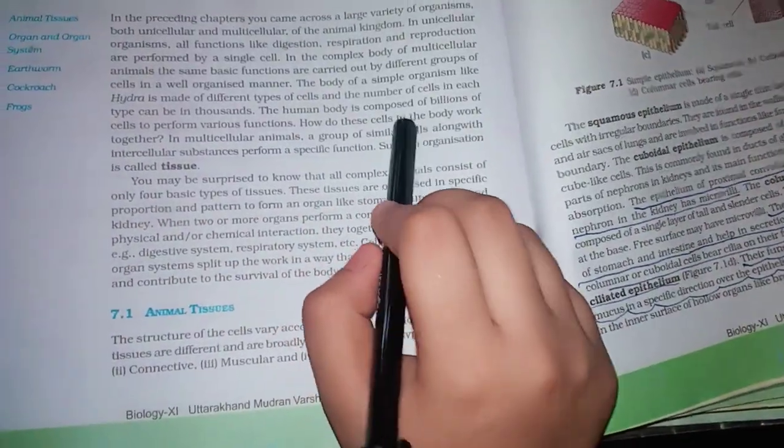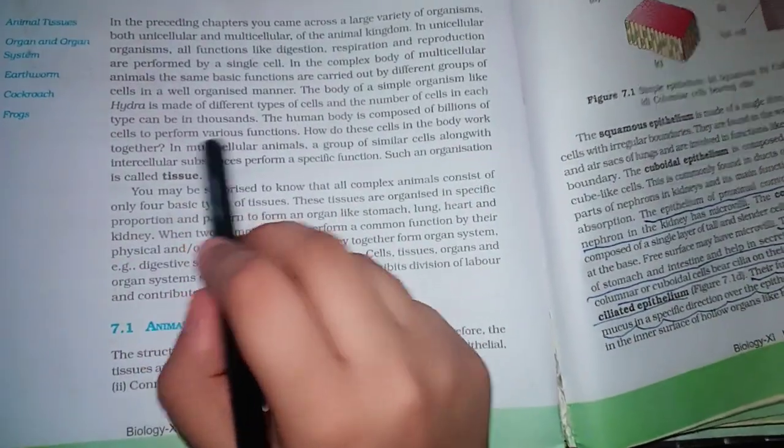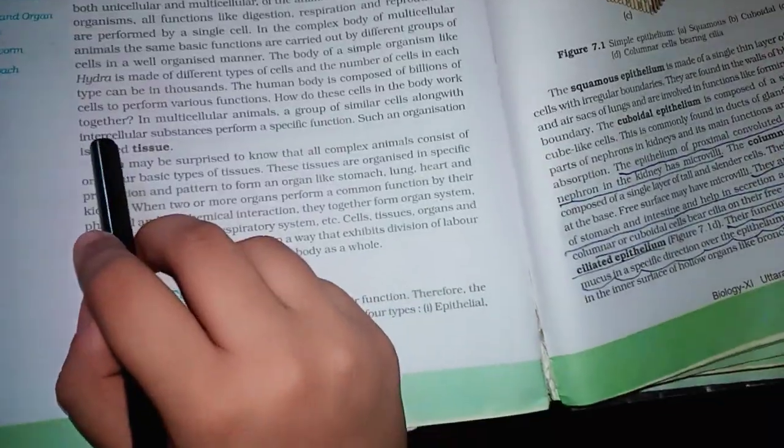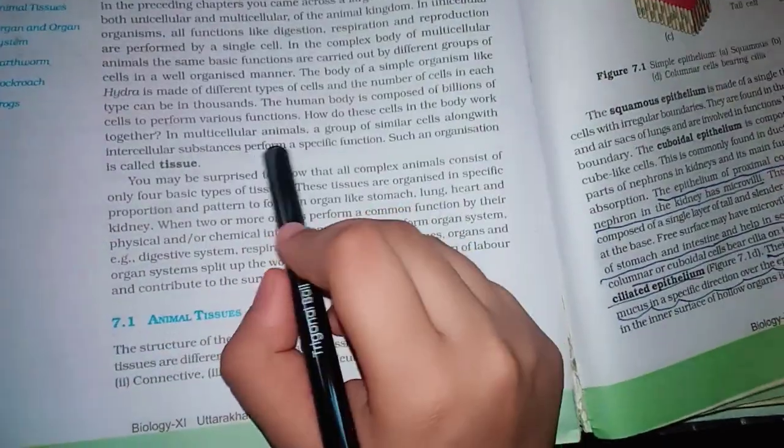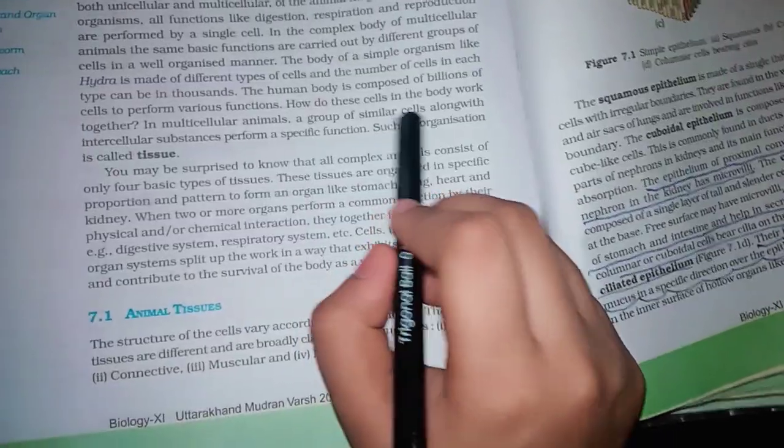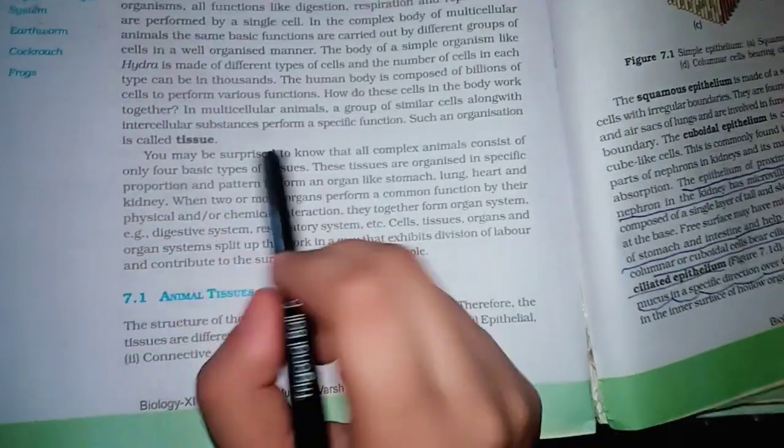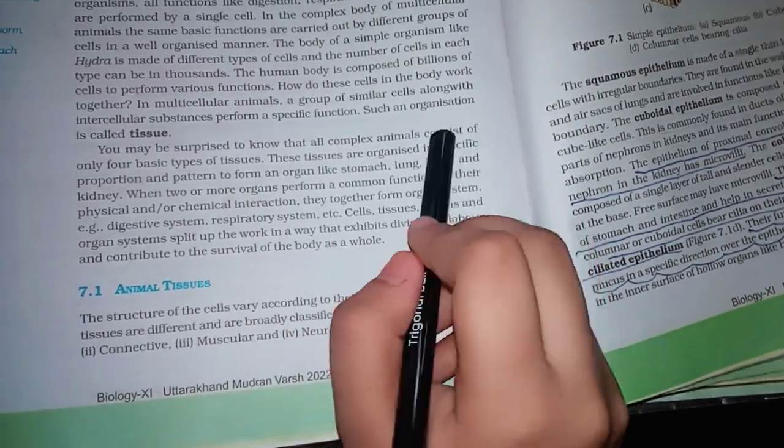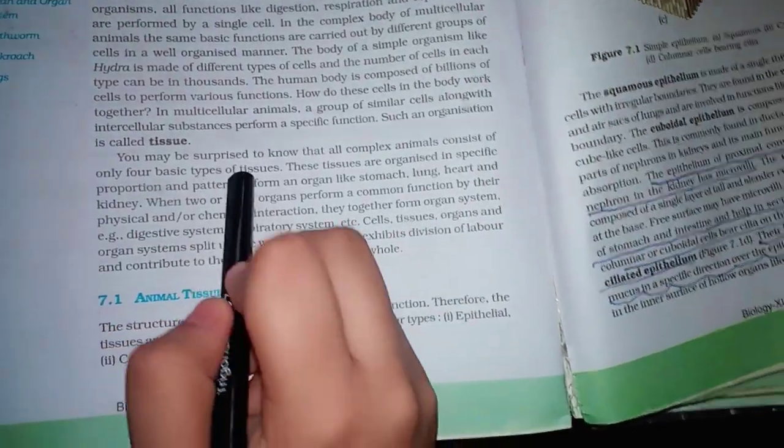How do these cells in the body work together? In multicellular animals, a group of similar cells along with intercellular substances perform a specific function. Such an organization is called a tissue. You may be surprised to know that all complex animals consist of only four basic types of tissues.